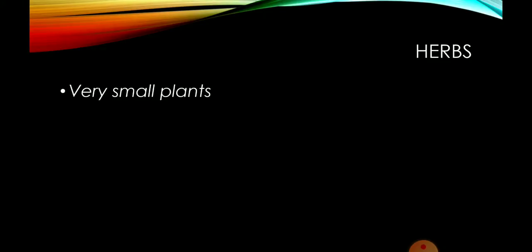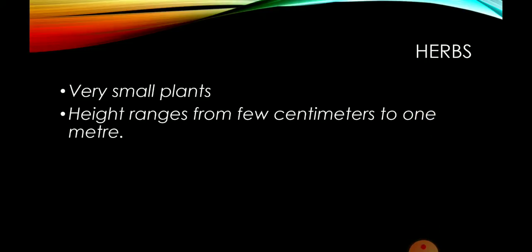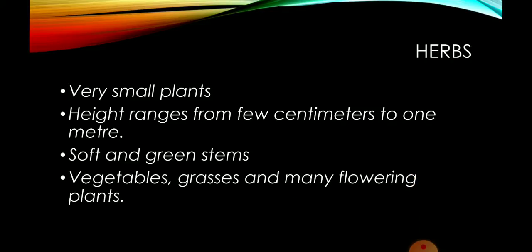Herbs पे आते हैं, बेटा — these are very small plants. बहुत छोटे छोटे जैसे grasses आपको दिखते हैं, ऐसे छोटे plants होते हैं। इनकी जो height होती है वो कुछ centimeters से एक meter तक mainly लंबी होती है। और इनके जो stem होते हैं वो green होते हैं और बहुत soft होते हैं। Wood नहीं होती इसमें। इसके examples हैं vegetables, grasses and many flowering plants. बहुत सारे flowering plants होते हैं — seasonal flowers जैसे marigold — यह सारे herbs में आते हैं.